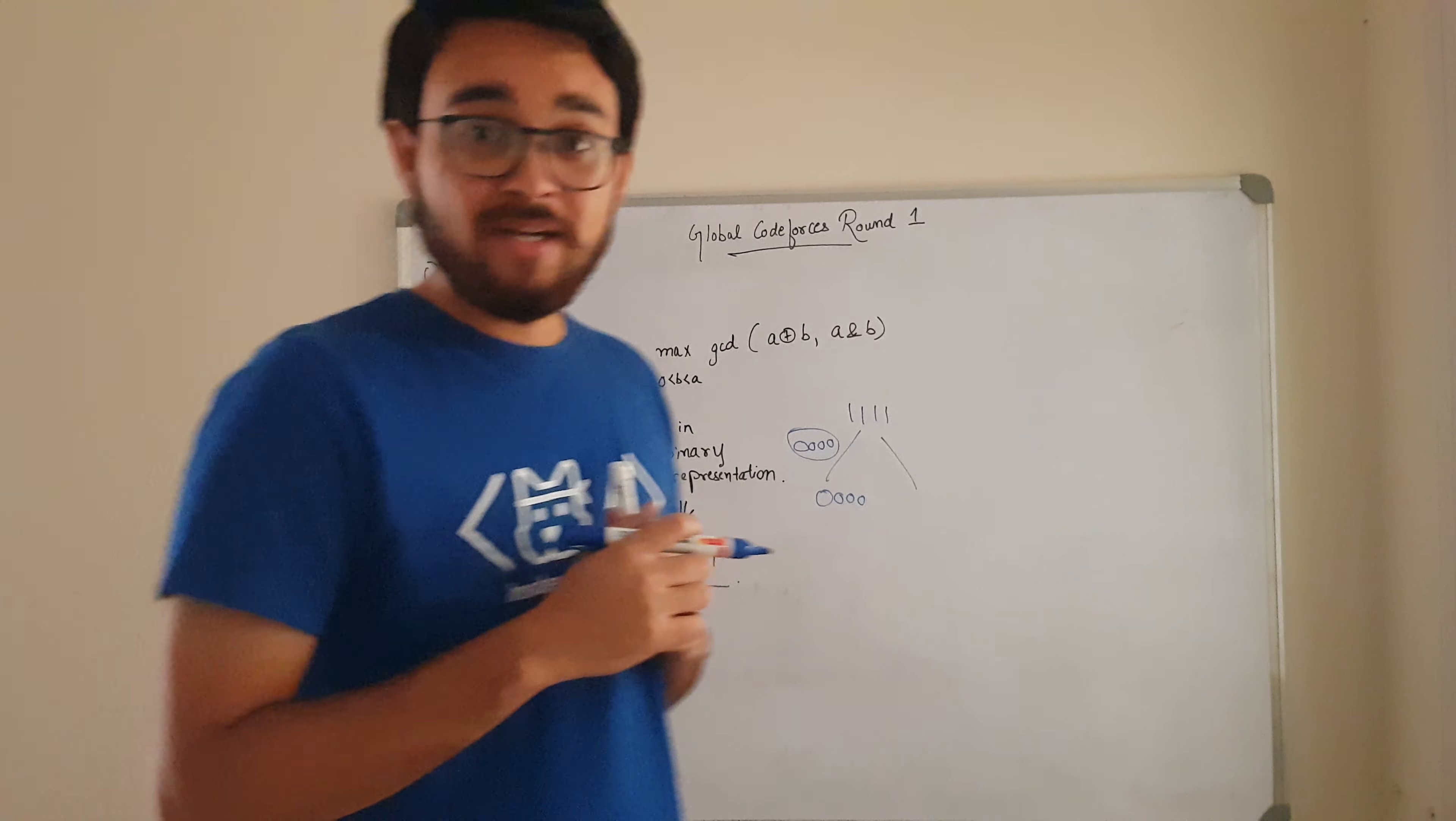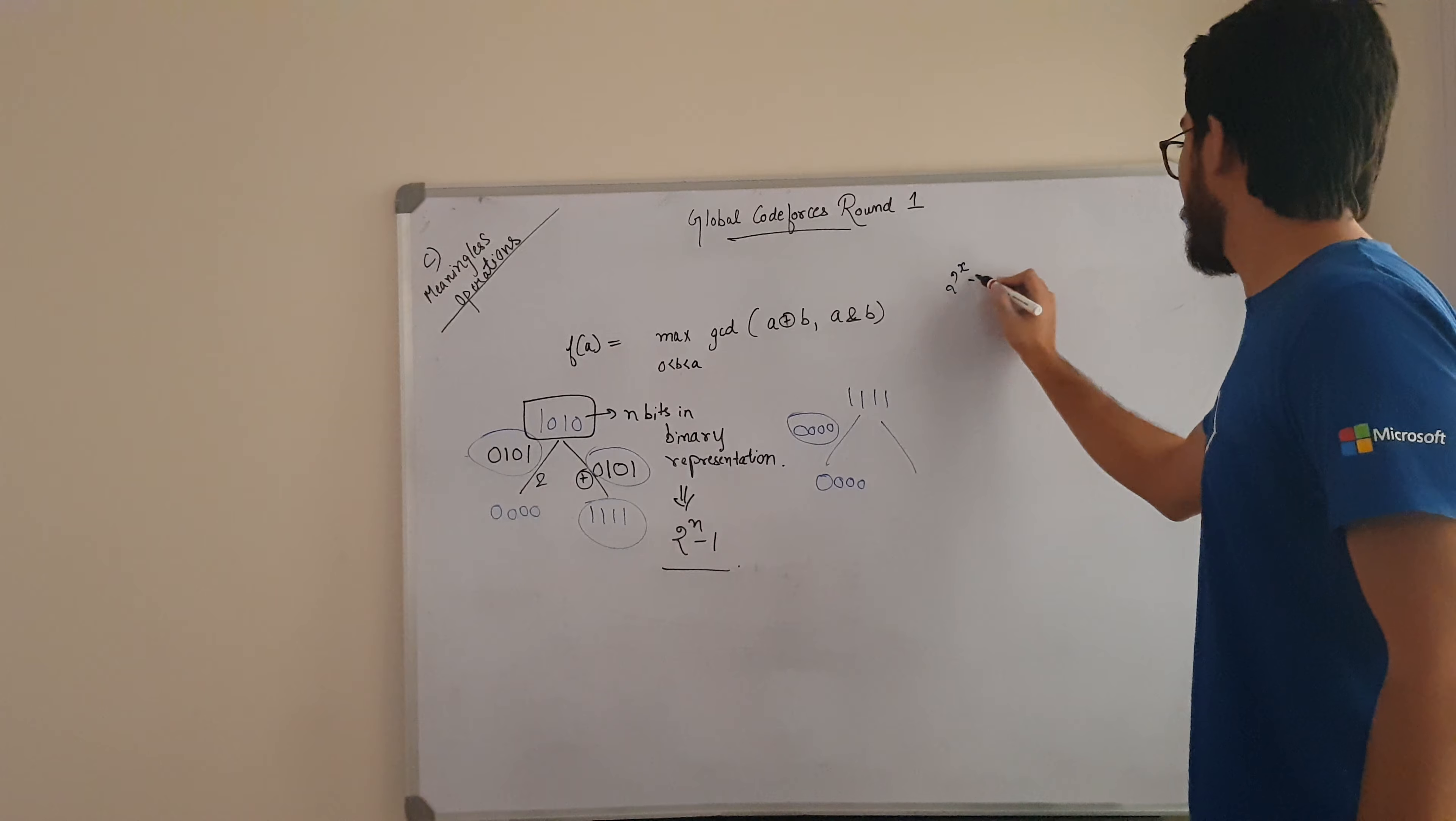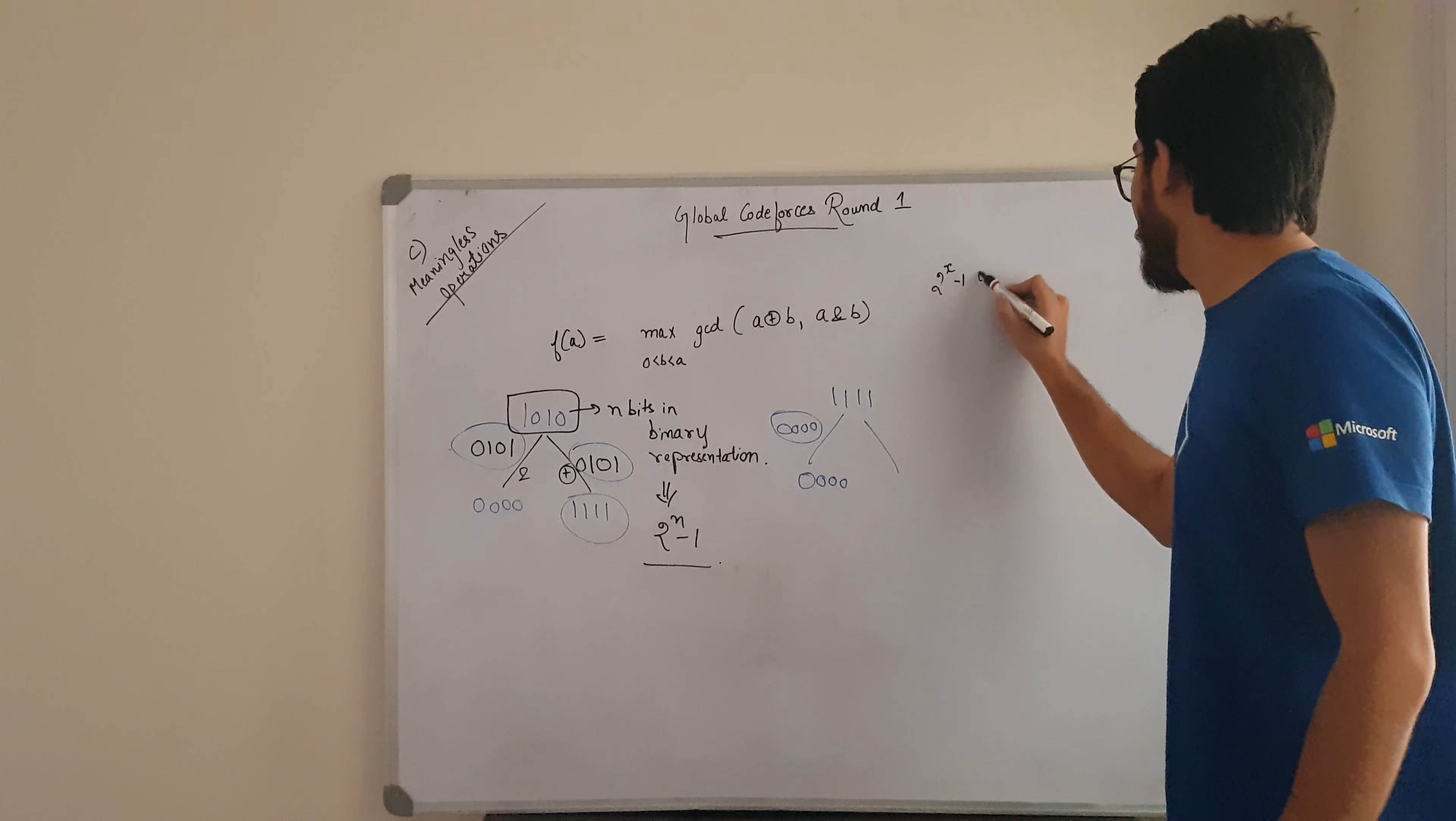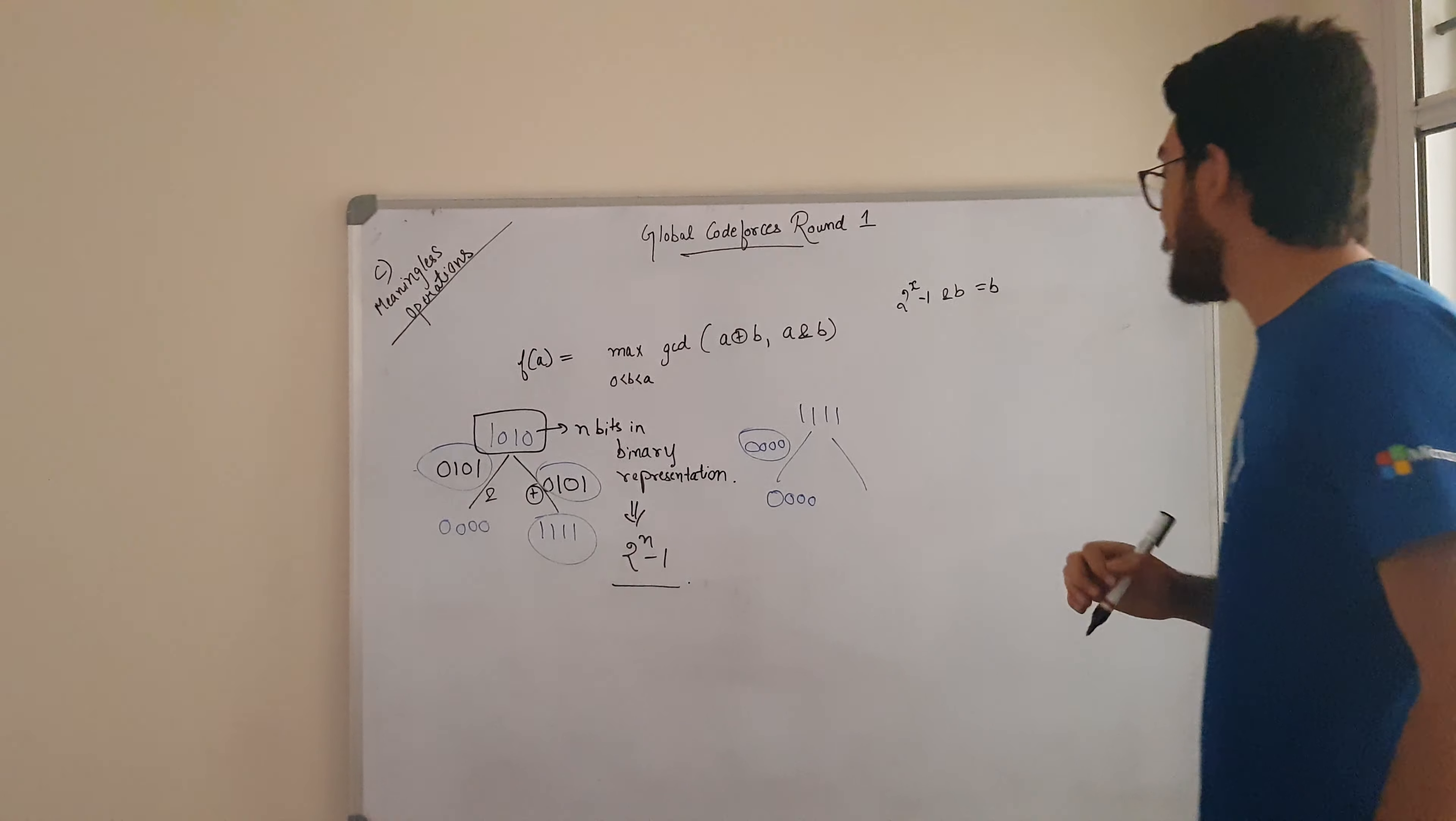So what will we do here? We will take a mathematical approach here. So all ones means the number is of the form 2 to the power x minus 1. When the number is of this form and I want to AND it with any other number, say I want to AND it with B, what this number is going to be? If you follow this, this number is going to be B only.